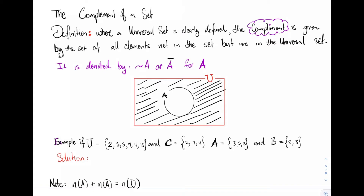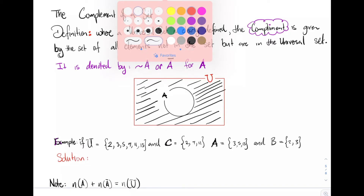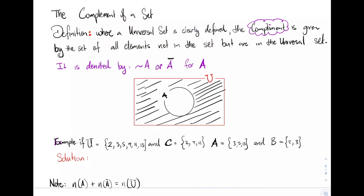Let's look at a numerical example. Given the universal set U = {2, 3, 5, 7, 11, 13}, C = {2, 7, 11}, A = {3, 5, 13}, and B = {2, 3}, how can we find the complement of A? The complement of A would be all elements still inside the universal set but not in A: so 2, 7, and 11.